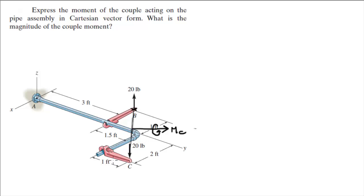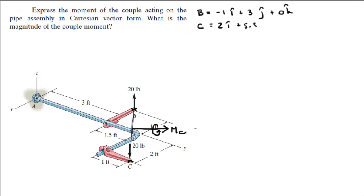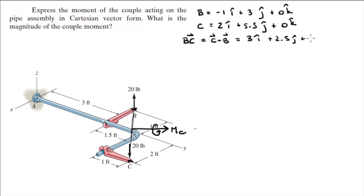The couple moment acts at B and at C, so you need to find the distance between them. B is sitting at −1i + 4j + 0k and C is sitting at 2i + 5.5j + 0k. To find that distance we find the vector from B to C, which equals C minus B, and that is equal to 3i + 2.5j + 0k.